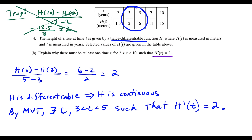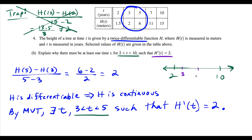What might throw people off is that they said the interval from two to ten, but our explanation uses the interval from three to five. The key is that from three to five is a subset of the bigger interval from two to ten. So if we're trying to find a value t between two and ten, a value found between three and five does count as a value t between two and ten.